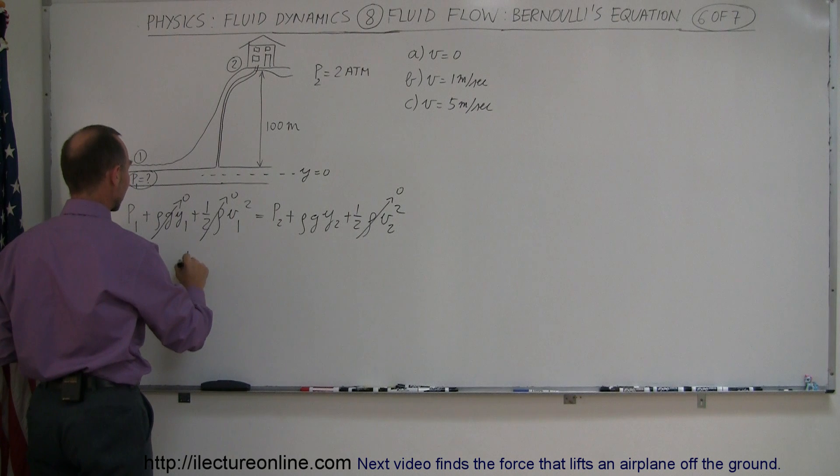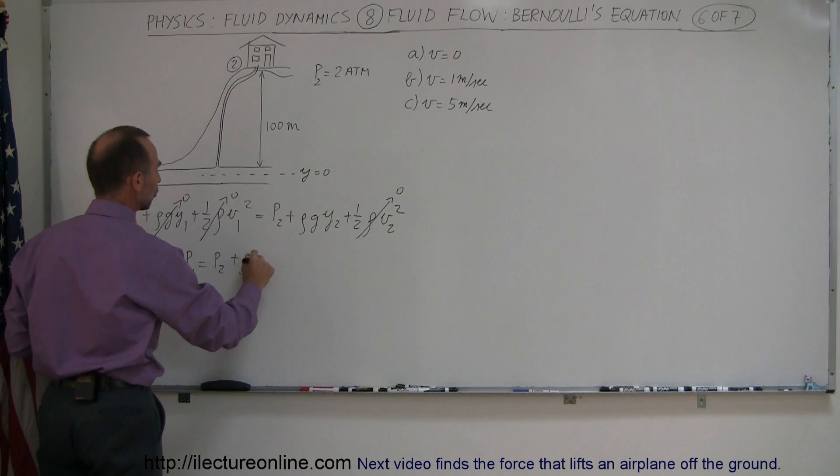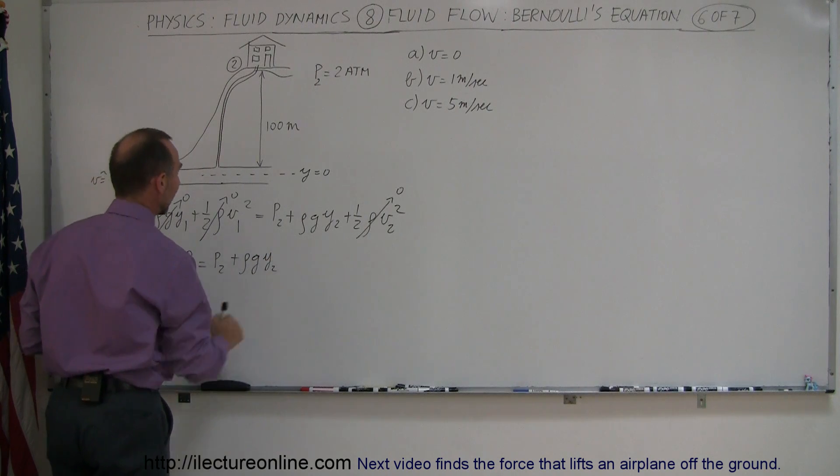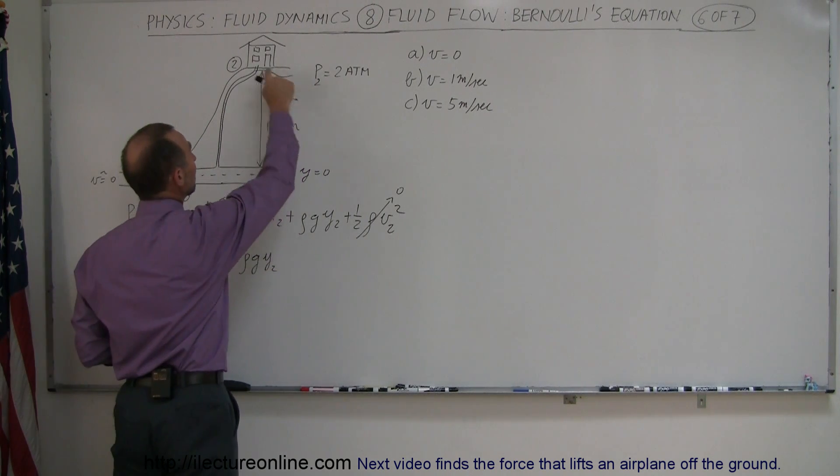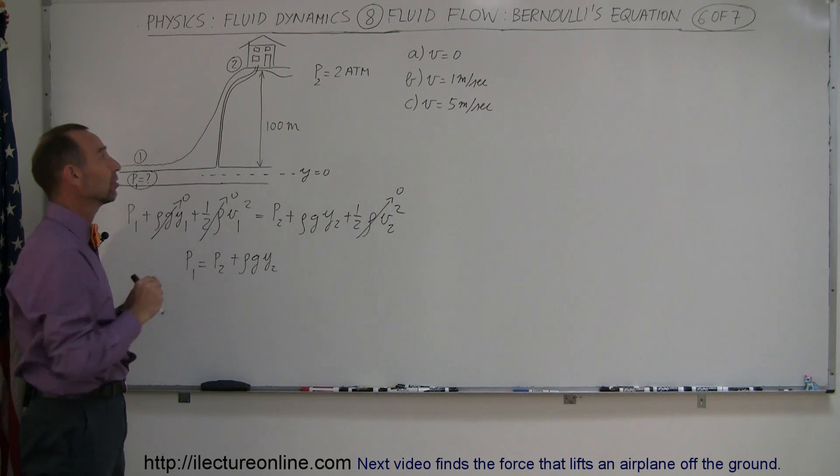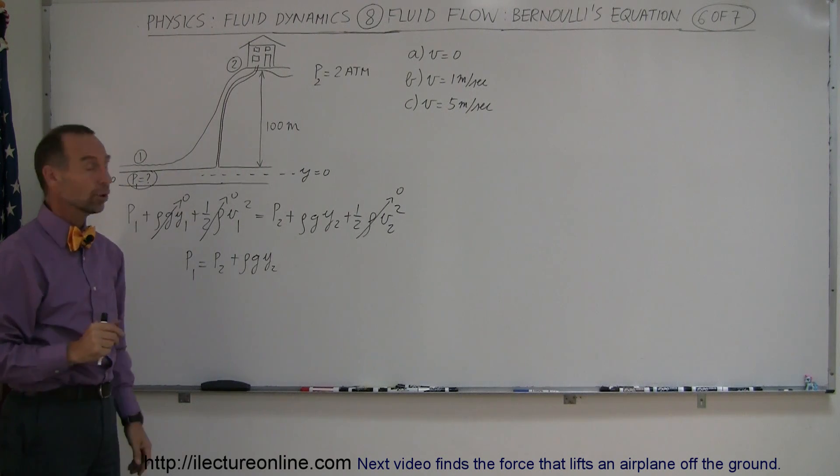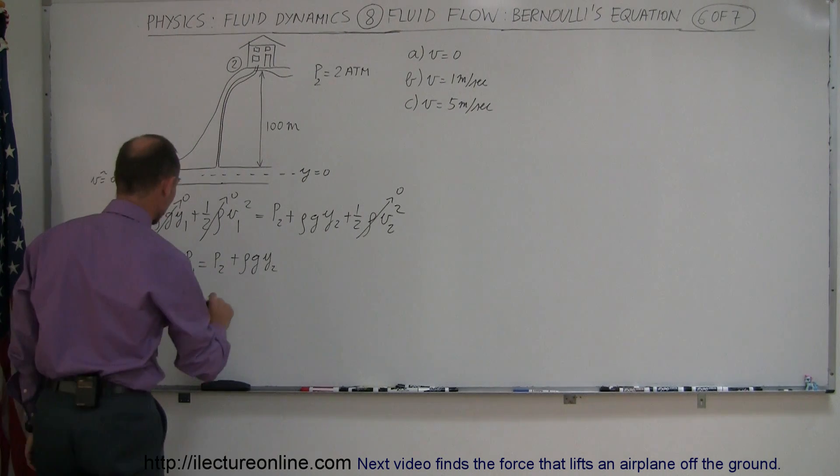And now the equation becomes that the pressure 1 is equal to the pressure 2 plus rho GY2. And if the condition is that we need that we want at least two atmospheres worth of pressure in the pipe as it reaches the house, what is the pressure, what does the pressure need to be down here to get the water up to the house? All right, let's plug in the numbers.